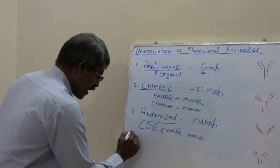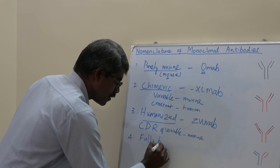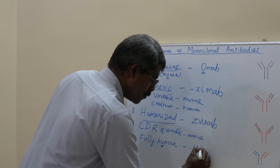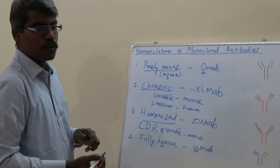The fourth type is fully human. Just as 'o' is used for mouse, 'u' is used for human. So fully human monoclonal antibodies carry the infix 'u', giving '-umab'.